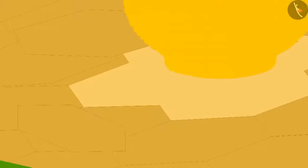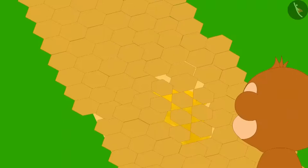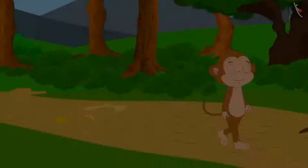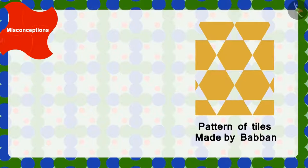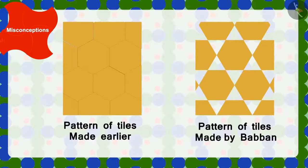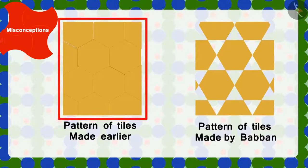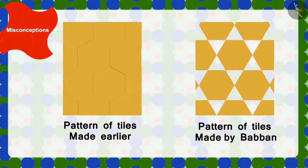He hid that vessel back under the ground. But he was not able to understand how the tiles were fixed on the floor. He placed the tile like this and went home happily. Children, can you tell me what is the difference between the patterns of the tiles made by Babban and the pattern of tiles already present on the floor? Yes, in the pattern made by Babban, there is some space between two tiles. Whereas, there was no space in the previous pattern of the floor.